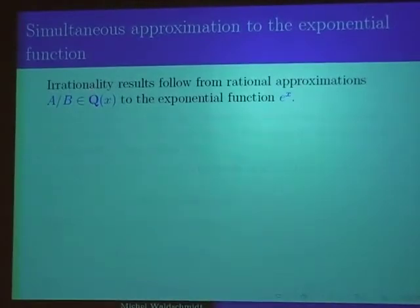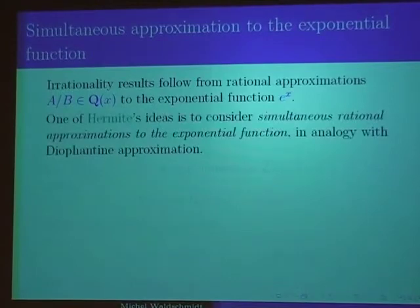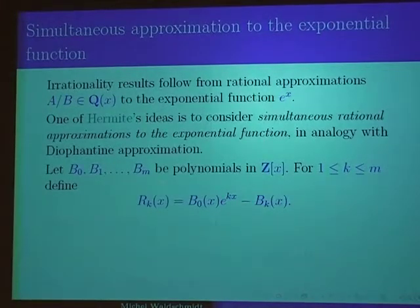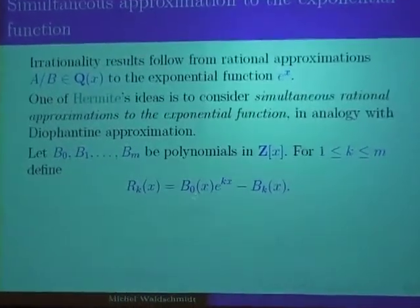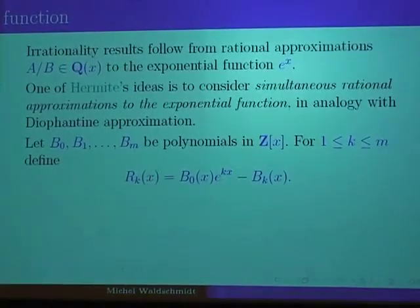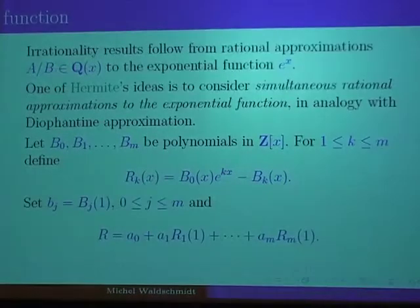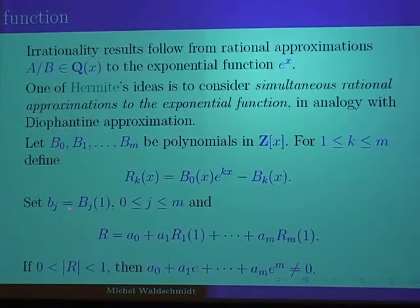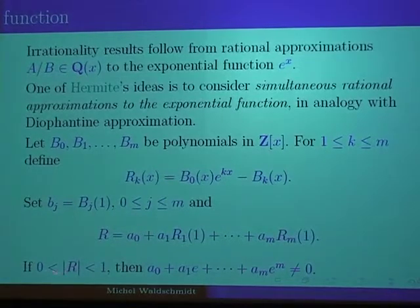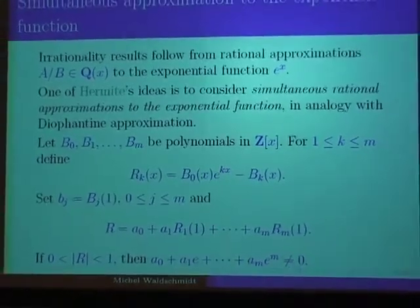Irrationality results follow from rational approximation to the exponential function. What Hermite did in order to get transcendence is to consider simultaneous rational approximation. He constructed polynomials b₀, ..., bₖ in z such that b₀(x)·e^x − bₖ(x) has a high multiplicity zero at the origin. The proof of the transcendence of e follows by specializing x = 1 — we get simultaneous approximation to e^1 up to e^m, and the remainder value, this linear combination at 1, is positive and less than 1. This was the sketch of Hermite's proof.